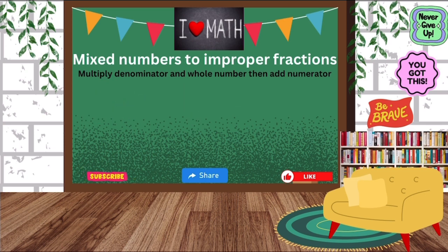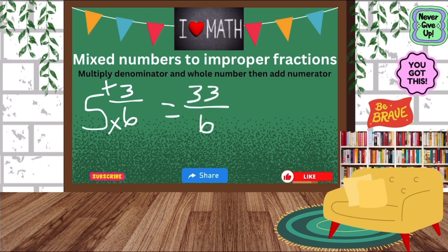Okay, let's try another one. Let's do 5 and 3 sixths. Multiply the denominator and the whole number. 6 times 5 is 30 and then add the 3. 30 plus the 3 is 33. Bring our denominator over, which is 6, and that's how we got 33 sixths.